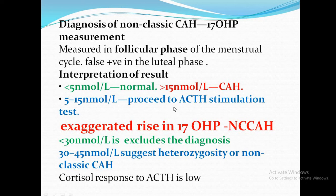On ACTH stimulation, a post-stimulation 17-hydroxyprogesterone level less than 30 excludes the diagnosis. An exaggerated rise confirms non-classical CAH. A value between 30 and 45 can suggest either heterozygosity or non-classical CAH, and the cortisol response to ACTH is low.